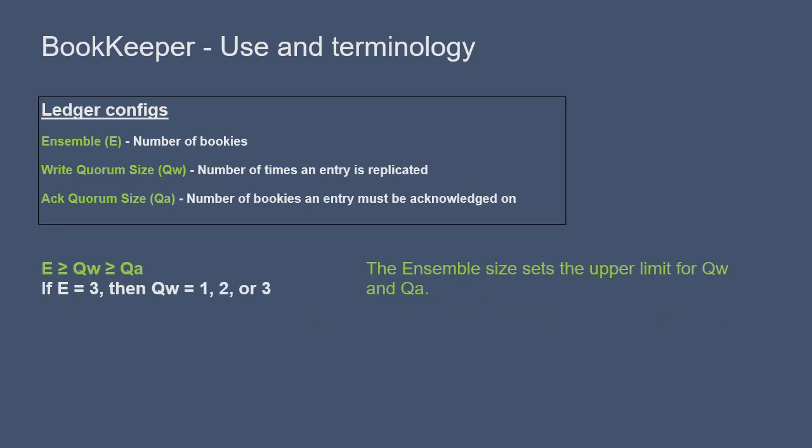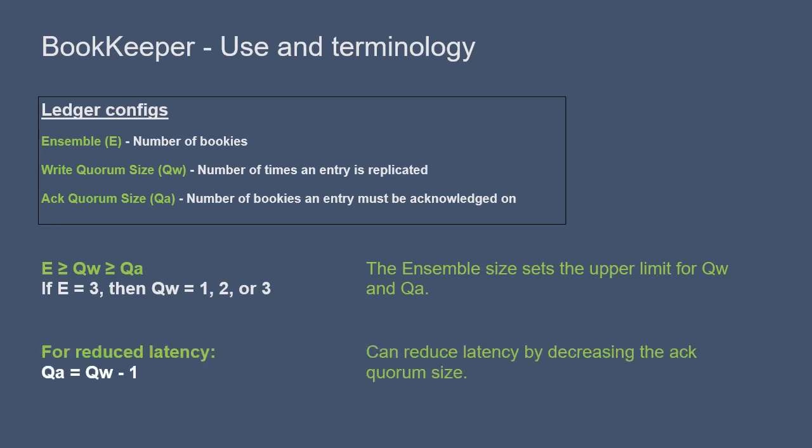To review: the value set for the ensemble — the number of bookies in the ledger — sets the upper limit for all the other values. E is greater than or equal to qw, which is greater than or equal to qa. To reduce latency, it can make sense in some cases to have the ack quorum size qa be one less than the write quorum size.